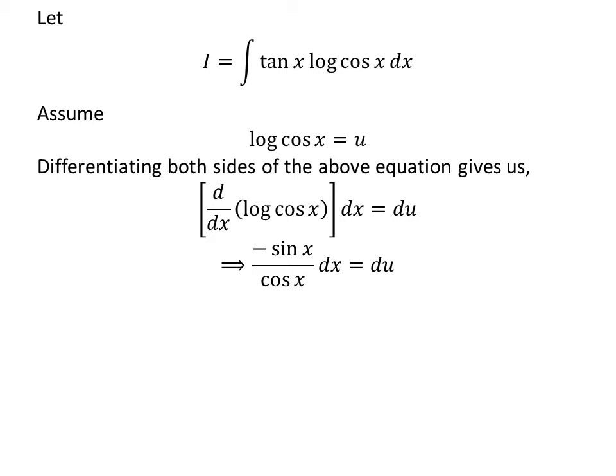So, minus sine of x upon cosine of x times differential of x is equal to differential of u. Sine of x upon cosine of x is equal to tangent of x. So, minus tangent of x times differential of x is equal to differential of u.